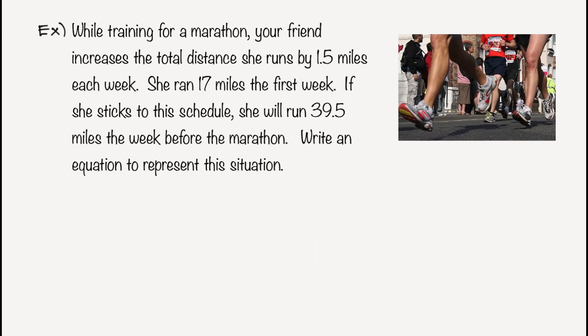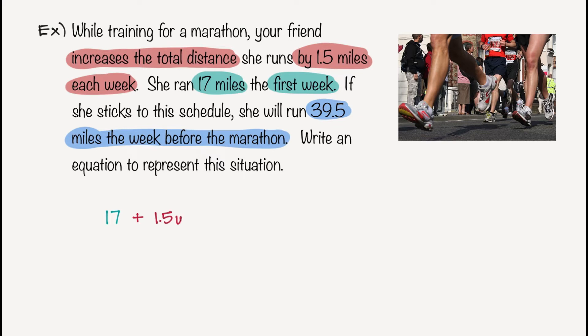So now what I have is a scenario. It says, while training for a marathon, your friend increases the total distance she runs by 1.5 miles each week. She ran 17 miles the first week. And if she sticks to the schedule, she will run 39.5 miles the week before the marathon. Write an equation to represent this situation. So I can see that the first week she ran 17 miles. So I'm going to start with the number 17. And since it says it is going to be increased by, I'm going to have a plus sign. And since it's 1.5 additional miles each week, that would be 1.5 times w, if that is my number of weeks. And all of this needs to equal 39.5.